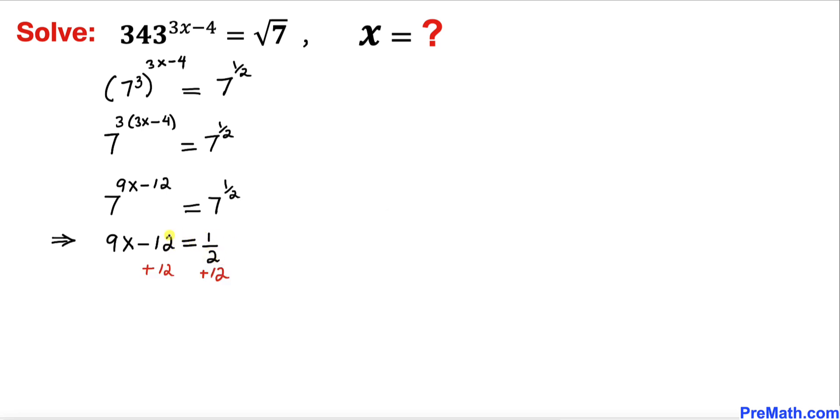Now let's go ahead and add 12 on both sides. So we ended up with 9x equals to 12 plus 1 over 2. Now let's focus on this right hand side. If we simplify this thing, this turns out to be 25 divided by 2.